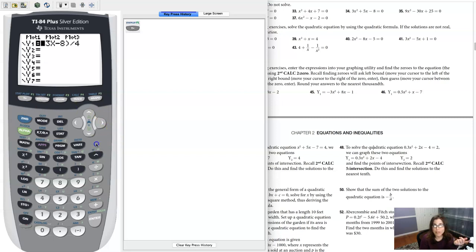Let me head to my y equals. Looks like I've got a line in there. Let me type in this function: negative 3x squared plus 8x minus 1. And because I'm in a math problem, I'm going to hit zoom 6.